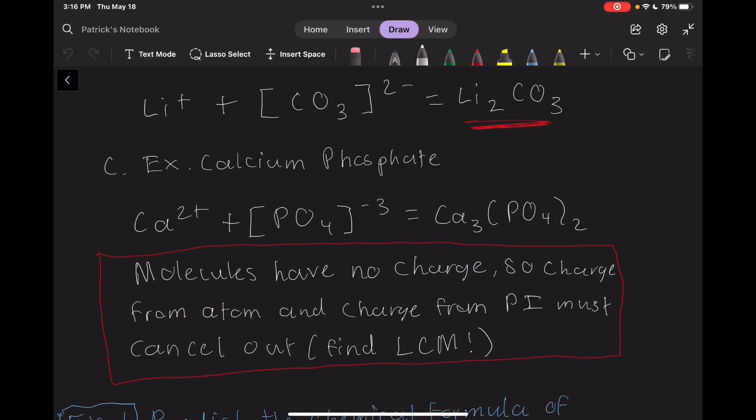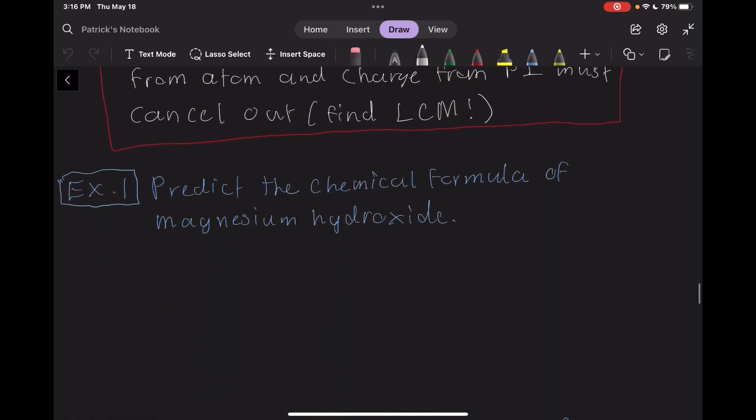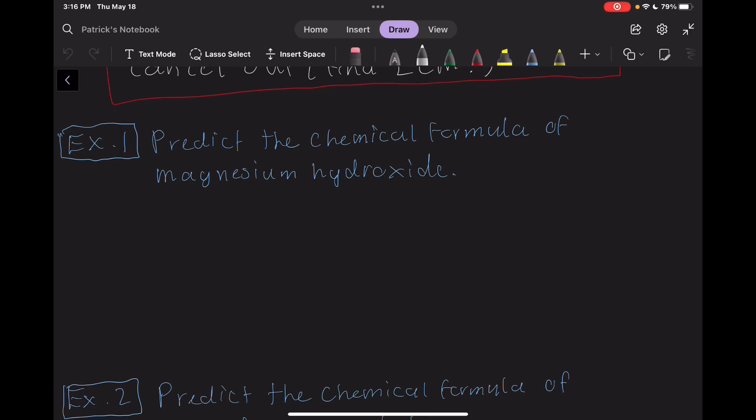We can actually make this even easier by using our cross-multiplication method we discussed in a previous video. The charge on one ion becomes the subscript on the other ion. We'll use both these strategies on our example problems, so don't worry too much if what I just said doesn't make much sense. Speaking of which, here's example 1. Predict the chemical formula of magnesium hydroxide. This is, of course, an ionic compound. Magnesium is a metal.